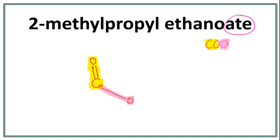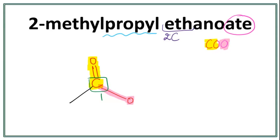We have the functional group drawn in. Let's work on the parent chain. This 'et' here tells us that there are two carbons in the parent chain. The carbon in the functional group is always the first carbon, so we need two carbons in total — just draw another carbon here. Now let's work on the side chain, which is 2-methylpropyl. This 'propyl' tells us that there are three carbons in the side chain, and the side chain always attaches with the oxygen in the functional group.